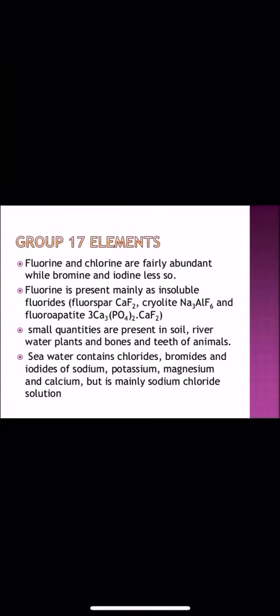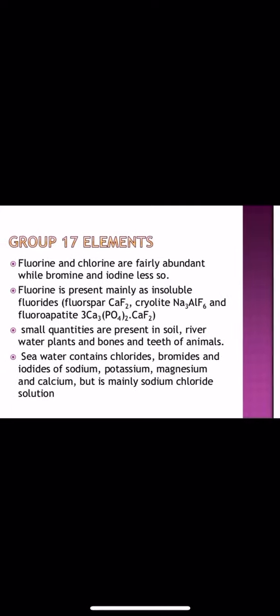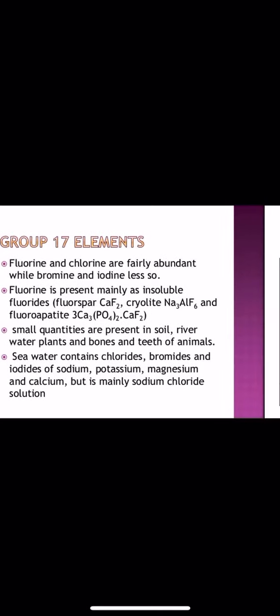Fluorine and chlorine are fairly abundant, while bromine and iodine are less. Fluorine is mainly present as insoluble fluoride in the form of fluorspar, cryolite or fluorapatite. Small quantities are also present in soil, river water, plants and bones and teeth of animals. Sea water contains chlorides, bromides and iodides of sodium, potassium, magnesium and calcium.